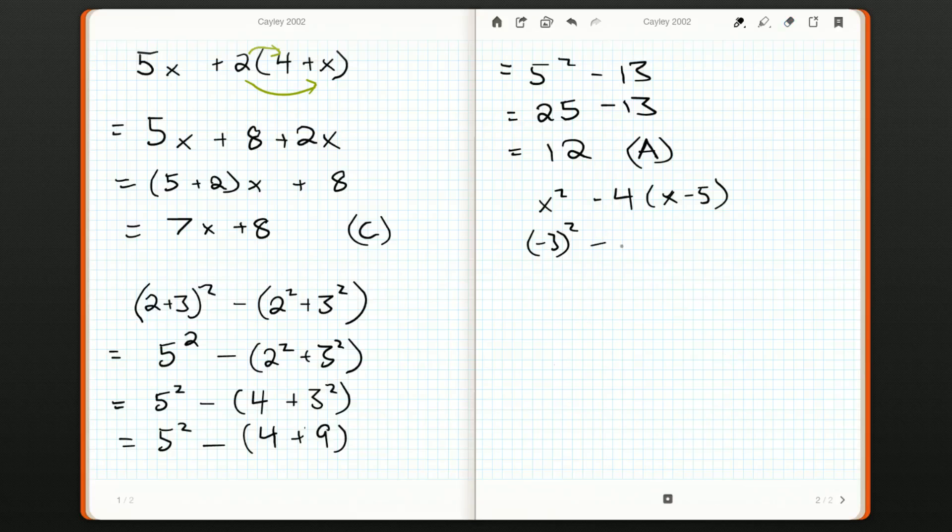Although if we're lucky, the wrong answer that we get will not be one of our multiple choice answers, and we'll realize something went wrong. So we've substituted in x equals negative three, and now it's time to take a look at our order of operations.